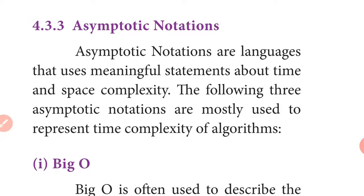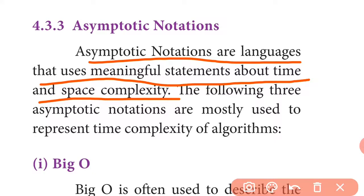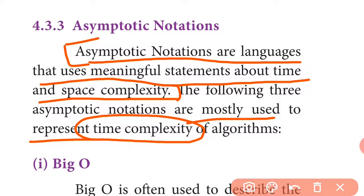Asymptotic notations are languages that use meaningful statements about time and space complexity. The following three asymptotic notations are mostly used to represent time complexity of algorithms.